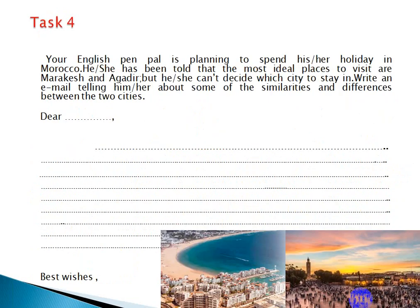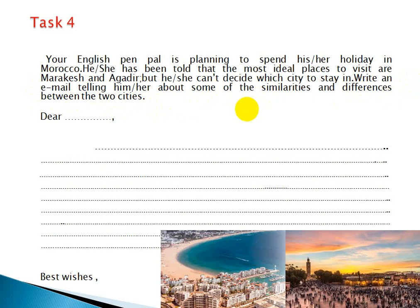The last task: you are going to write an email. Your English pen pal is planning to spend his or her holiday in Morocco. He or she has been told that the most ideal places to visit are Marrakesh and Agadir, but can't decide which city to stay in. Write an email telling him or her about some of the similarities and differences between the two cities, using what you have learned.